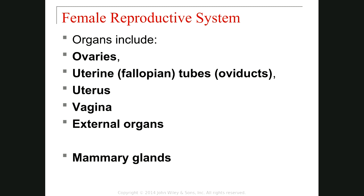The last part of the female reproductive system is the mammary gland. The mammary gland is a modified sweat gland, or sudiferous gland. Because the changes in the mammary gland happen during the changes in the reproductive system cycle, we will discuss this gland within the female reproductive system.